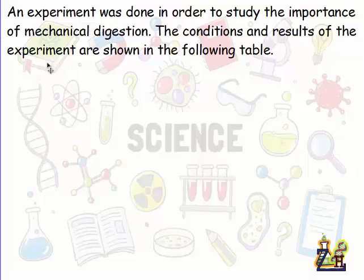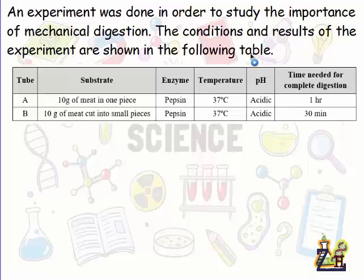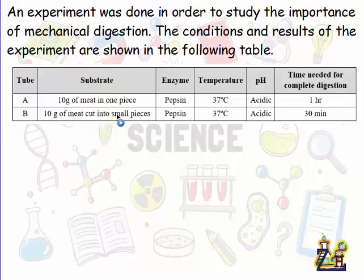The conditions and results of the experiment are shown in the following table. Let's see the table together. We have two tubes, both containing 10 grams of meat. In tube A, the meat is in one piece, while in tube B, it is cut into small pieces.